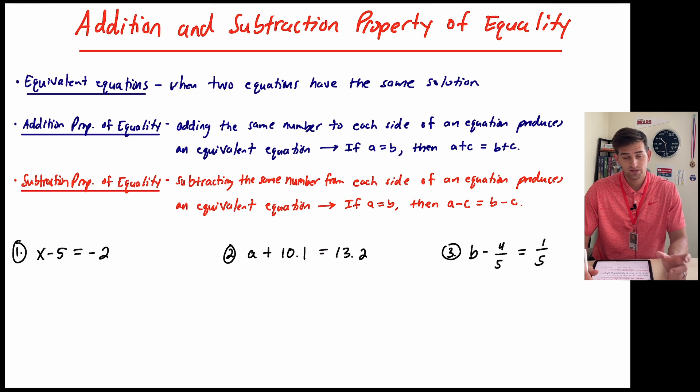So with the addition and subtraction properties of equality, we're trying to create equivalent equations. For addition, it says we can add the same number to each side of the equation and it will produce an equivalent equation. So we see the algebra there. It says if A is equal to B, then A plus C would be equal to B plus C. So basically we are just adding C to both sides of the equation. A lot of times we can think about this as keeping the equation balanced, so we have to do that. So we can do whatever we want to one side of the equation as long as we do it to the other side as well.